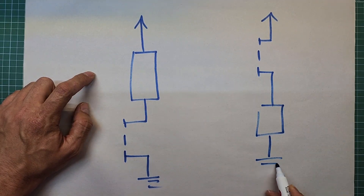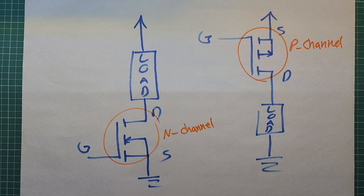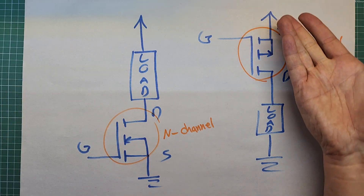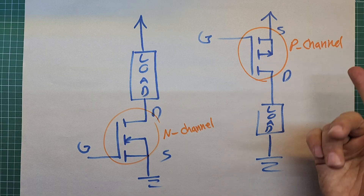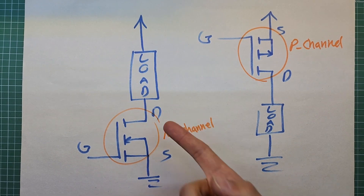Difference number one: switching side. If your transistor is a P-channel, place it on the positive side of the power supply. If it's an N-channel, switch the negative or ground side of the load. Even though both transistors can switch either side, it's better to use each where they perform best. When switching the high side, use a P-channel MOSFET; when switching the ground side, use an N-channel MOSFET.